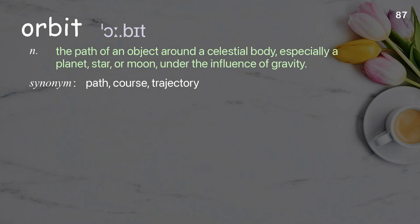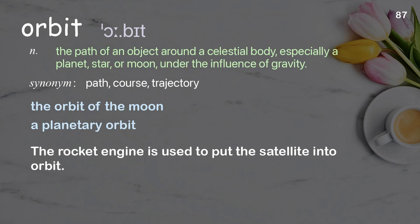Orbit: the path of an object around a celestial body, especially a planet, star, or moon, under the influence of gravity. Examples: the orbit of the moon, a planetary orbit. The rocket engine is used to put the satellite into orbit.